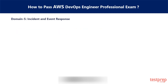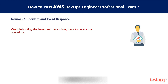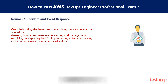Domain 5 is Incident and Event Response. This domain covers 18% weightage in the exam. The sections covered in this domain are: 1. Troubleshooting issues and determining how to restore operations. 2. Learning how to automate event alerting and management. 3. Applying concepts required for implementing automated healing and setting up event-driven automated actions.